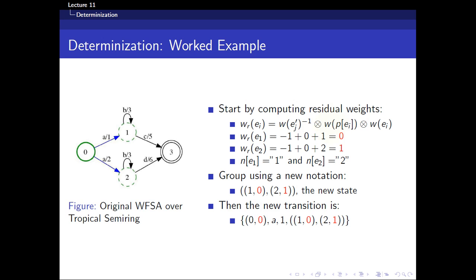To compute the residual weight, take the weight of the transition multiplied by the weight of its initial state, multiplied by the multiplicative inverse of the new arc weight. The new arc weight is 1, so the multiplicative inverse is −1. The residual weight of e1 is: −1 plus 0 plus 1 = 0. The residual weight of e2 is: −1 plus 0 plus 2 = 1. E1 ends up in state 1, and e2 ends up in state 2.